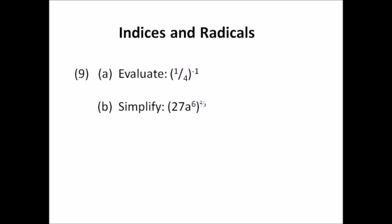Number nine: indices and radicals. a) Evaluate one quarter to the negative one half — you need to know what to do with that negative power. b) Simplify 27a⁶ all raised to the power two-thirds. You need to find 27 to the two-thirds power and then a to the six to the two-thirds power. Your answer will have a number and then a to some exponent.